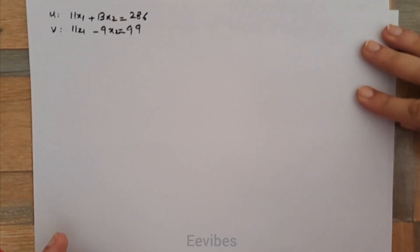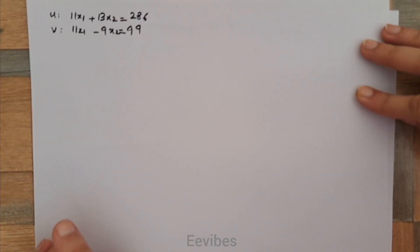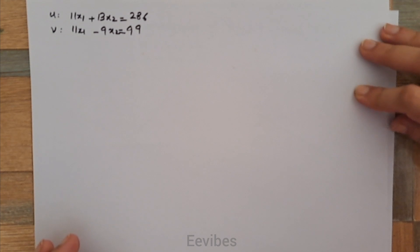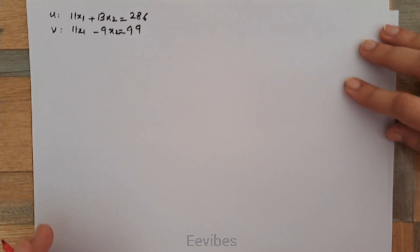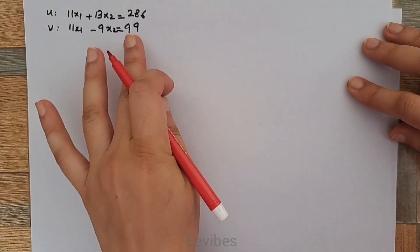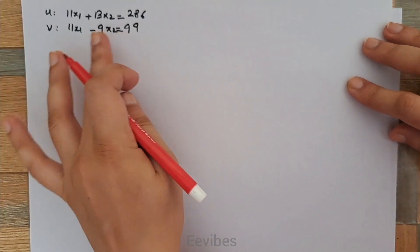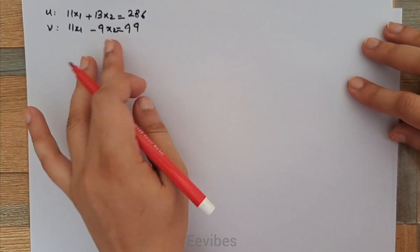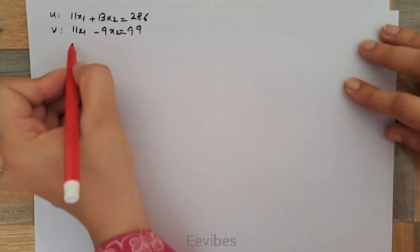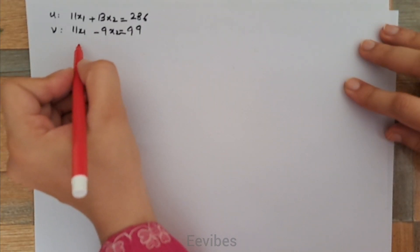Assalamu alaikum, I am Asma Mushtaq from the Double Lives, and in this video lecture we are going to study about the convergence criteria of the Gauss-Seidel method. For better understanding, I have considered a system of linear equations where only two variables are involved.